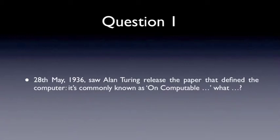Q1. 28th May, 1936. Alan Turing released a paper that defined the computer. It's commonly known as uncomputable.